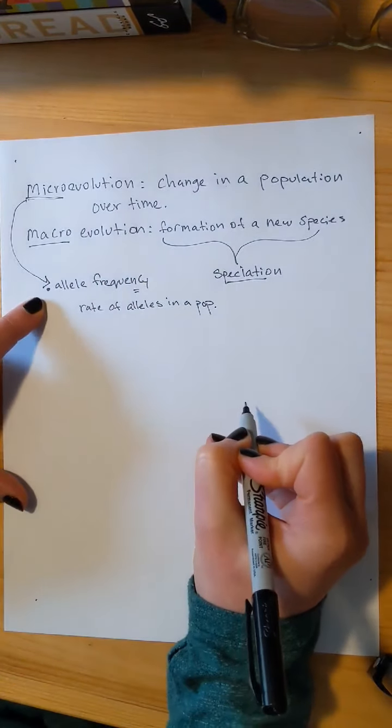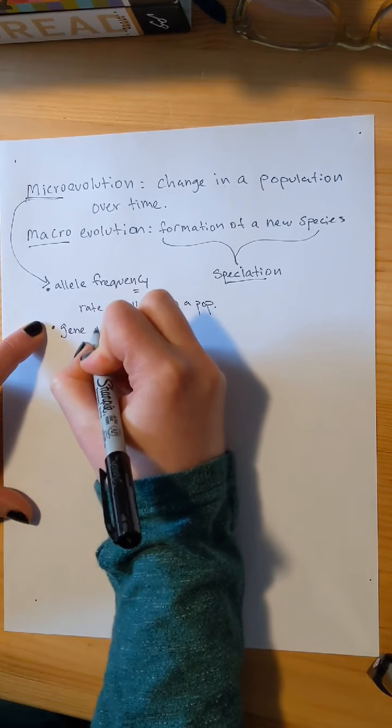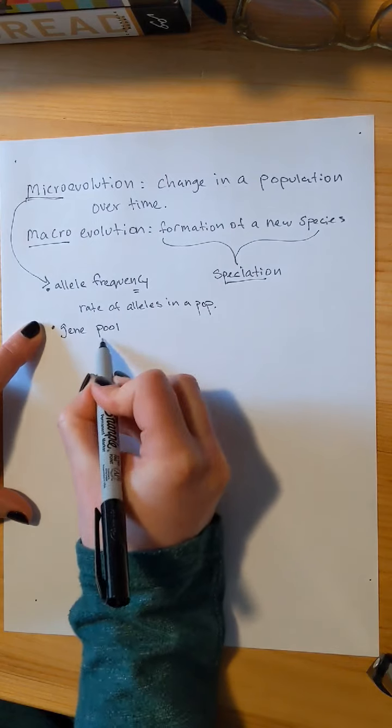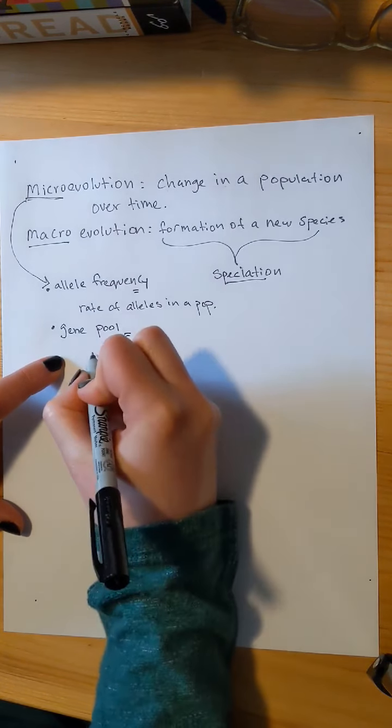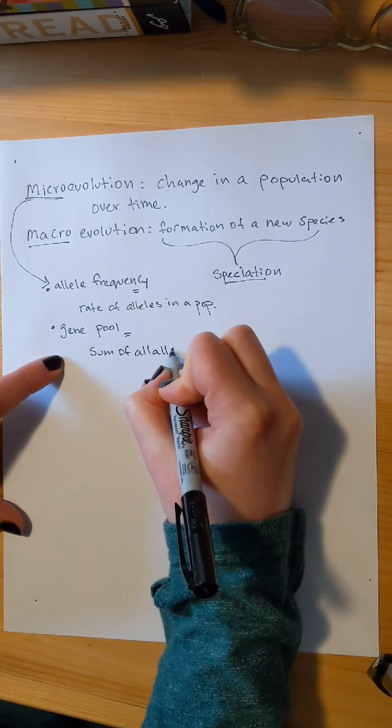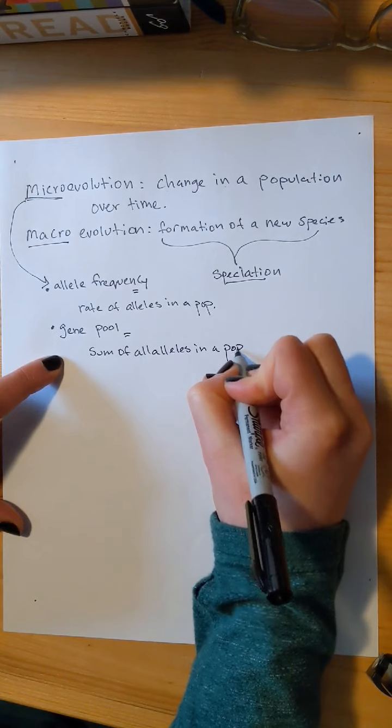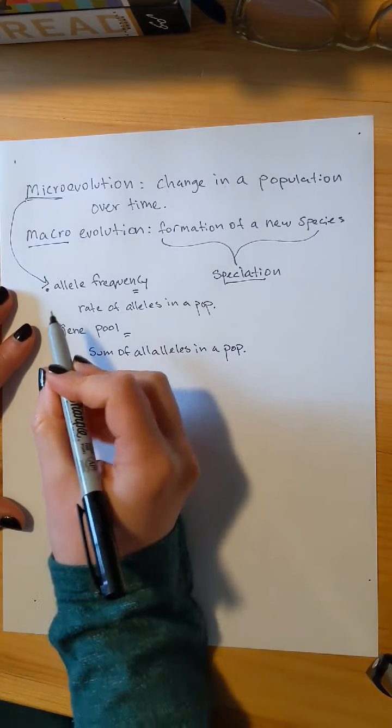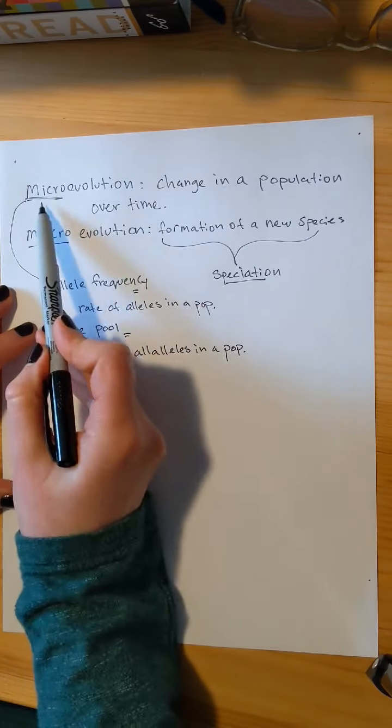And that is going to be the rate of alleles in a population. I'm going to abbreviate population as pop. And we're also going to be changing our gene pool.